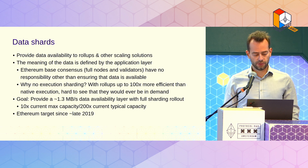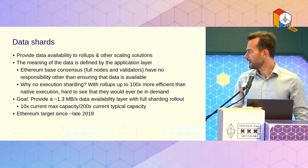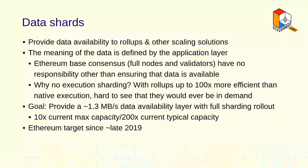Our goal is to provide about 1.3 megabytes per second of data availability with the full sharding rollouts. This is about 10x the current max capacity, or like 200 times the typical capacity of the current Ethereum base layer. And this has been the Ethereum target since roughly late 2019.